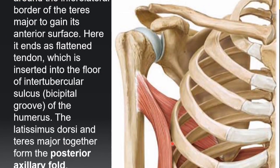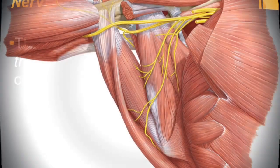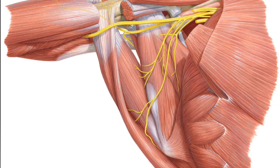From its extensive origin, the fibers pass laterally with different degrees of obliquity: the upper fibers are nearly horizontal, the middle fibers are oblique, and the lower fibers are almost vertical, forming a sheet that overlaps the inferior angle of the scapula. This sheet curves around the inferolateral border of teres major to gain its anterior surface, ending as a flattened tendon inserted to the floor of the intertubercular sulcus. Latissimus dorsi and teres major together form the posterior axillary fold. The nerve supply is by the thoracodorsal nerve from the posterior cord of the brachial plexus.